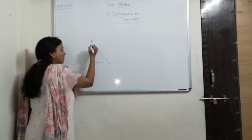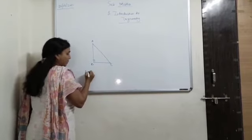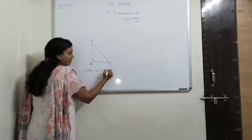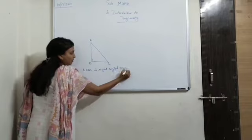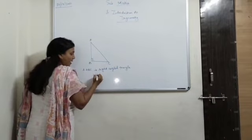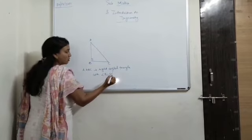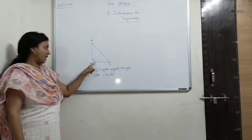So this is right angle triangle A, B, C. Triangle ABC is right angle triangle with angle B equal to 90 degree. So here I have taken B angle as 90 degree angle.